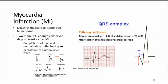Myocardial infarction is the death of myocardial tissue due to ischemia. Two main ECG changes are observed from two days to weeks after MI: complete resolution and normalization of the tracing, and the persistence of a pathologic Q wave. The sequence goes from normal to acute, to one to two days, to days later, to a week later — by a week, everything else normalizes except the pathologic Q wave. A pathologic Q wave is greater than 0.04 seconds and its depth is greater than 25% of the R wave height. So if the R is 10 millimeters high, a depth greater than 2.5 millimeters is pathologic.